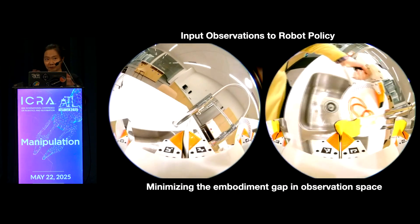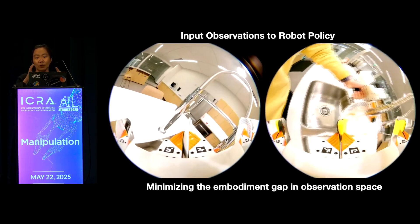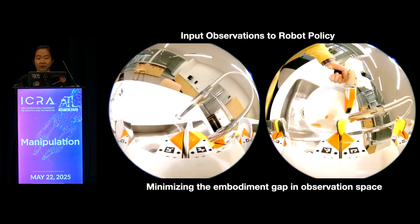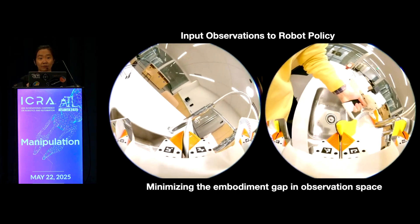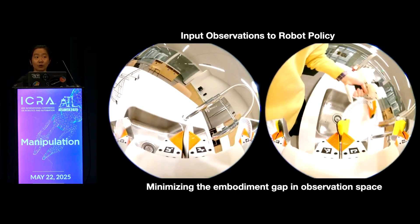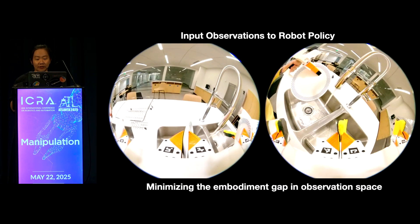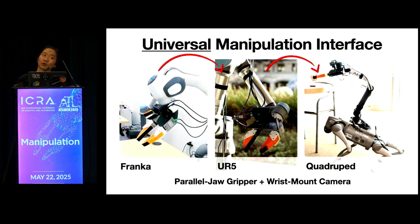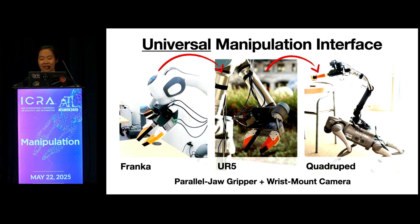From this wrist-mounted camera view, there is almost no difference between human demonstration data and robot execution data, thereby minimizing the embodiment gap. More importantly, we make sure this hardware interface is shareable across different robot hardware, such as different robot arms or even quadruped robots. As long as you have a parallel jaw gripper with a wrist-mounted camera, you can use UMI to collect data.